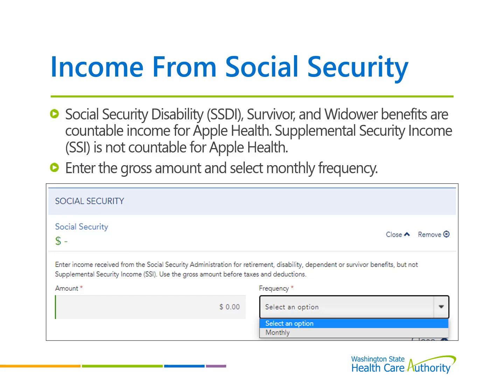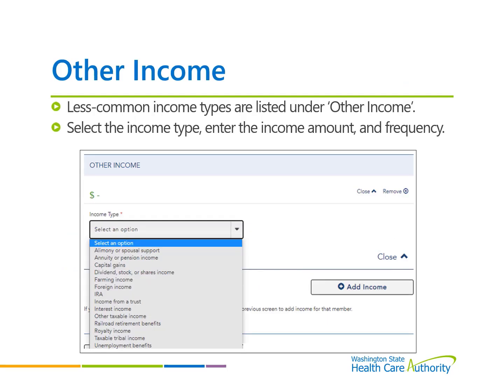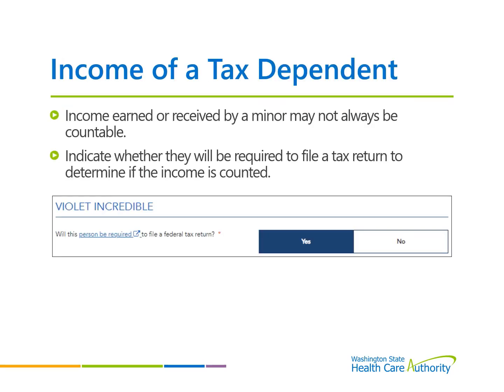Social Security Disability Income survivor and widower benefits are not countable income for tax purposes, but are one of the exceptions of countable income for MAGI-based Apple Health. If any household members receive this type of income, enter the gross amount under the income option for Social Security. For those who earn income from less common options, this may be listed under Other Income — select the income type that fits and enter the income amount and frequency. If a minor in the household is receiving income, the system will ask whether that minor is required to file a tax return before prompting to enter the income information, which determines whether the minor's income counts toward total household income.